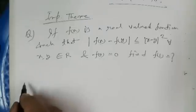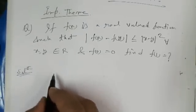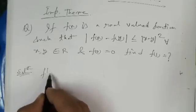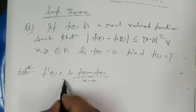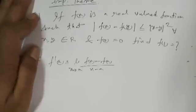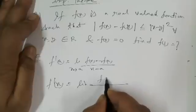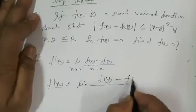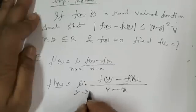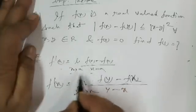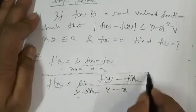Let's start the solution. We know f'(a) means limit of [f(x) - f(a)] / (x - a) when x tends to a. So f'(x) can also be written as limit of [f(y) - f(x)] / (y - x) when y tends to x. Here y is the variable and x is the constant.